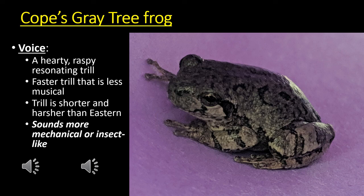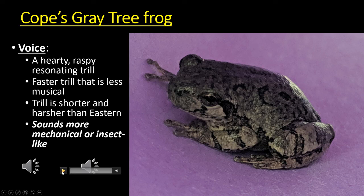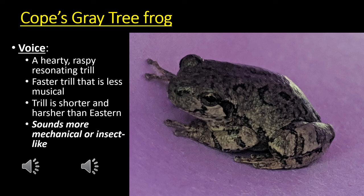Here are a few audio examples of the Cope's gray tree frog call — just quick, raspy trills. Something you may have thought was a bug at night while camping is actually a Cope's gray tree frog. The eastern gray tree frog is much more musical. At peak breeding season there will be lots of individuals calling one right after another, but they're all just short little raspy trills.